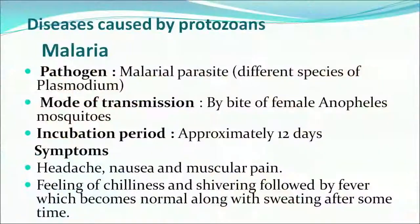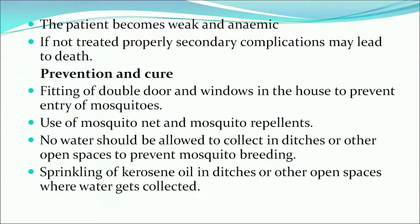Now we will discuss diseases caused by protozoans. The first is malaria, one of the dreadful diseases highly affecting children. The pathogen is the malarial parasite — different species of Plasmodium. Mode of transmission is the bite of female Anopheles mosquitoes, with an incubation period of roughly 12 days. Symptoms include headache, nausea, muscular pain, chilliness and shivering followed by fever with sweating. The patient becomes weak and anemic; if untreated, secondary complications may lead to death. Prevention includes using mosquito nets, repellents, and preventing water collection in open spaces.